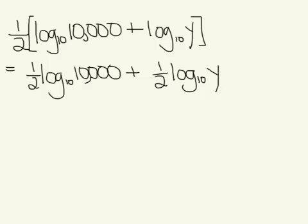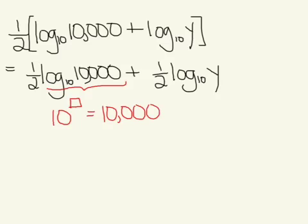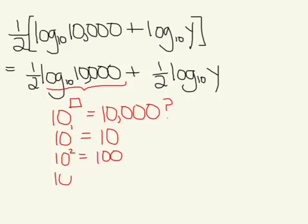So you want to evaluate this part. The way you evaluate that is you ask yourself, if the base is 10, what would the power on 10 need to be for my answer to come out to 10,000? 10 to the first power gives you 10. 10 squared gives you 100. And it turns out that it's 10 to the fourth that gives you 10,000.